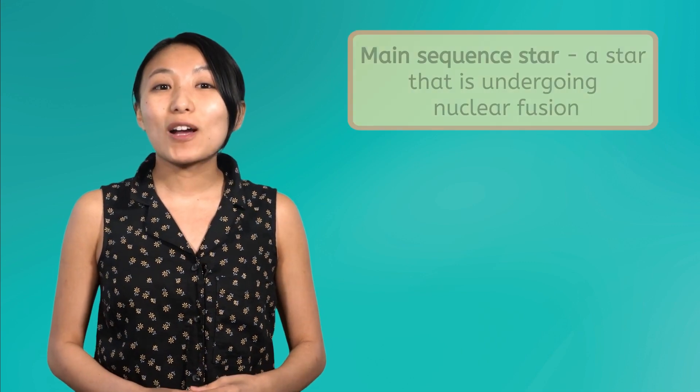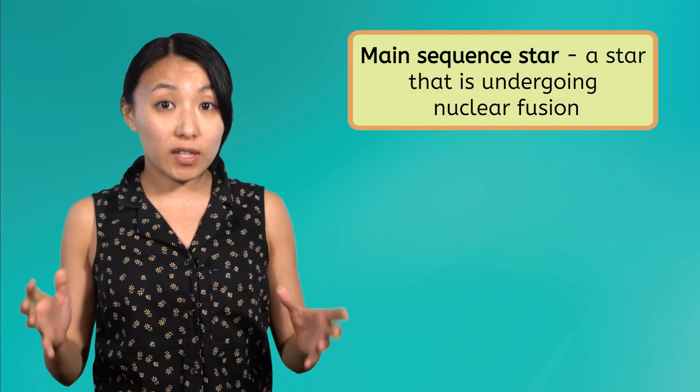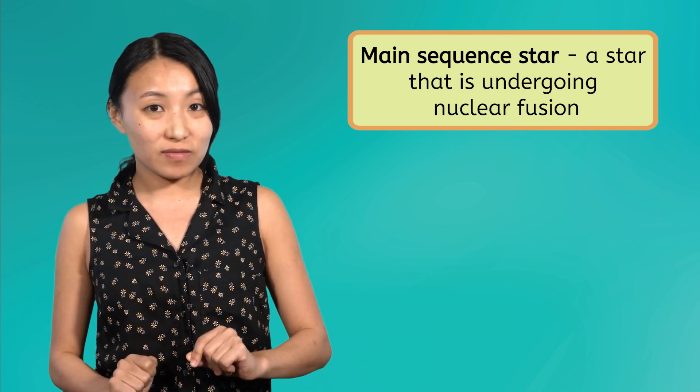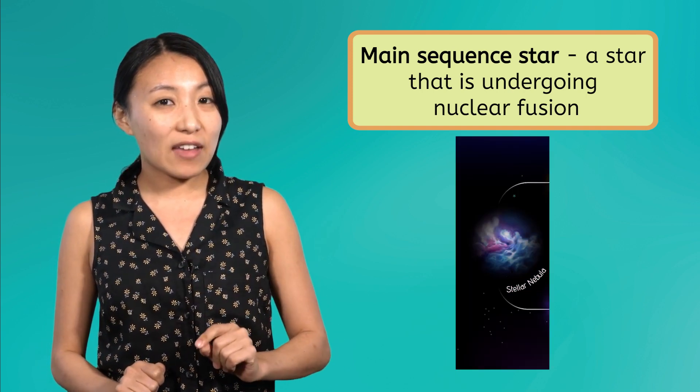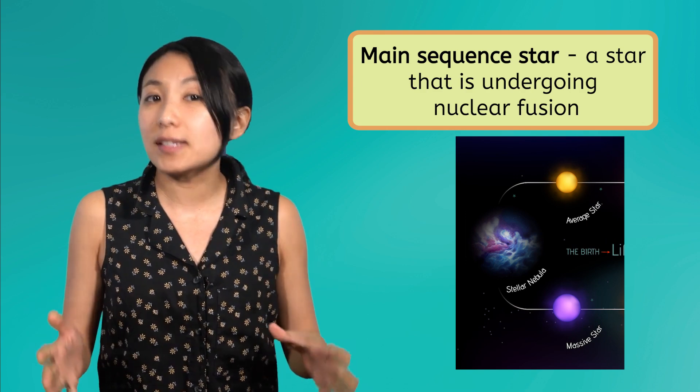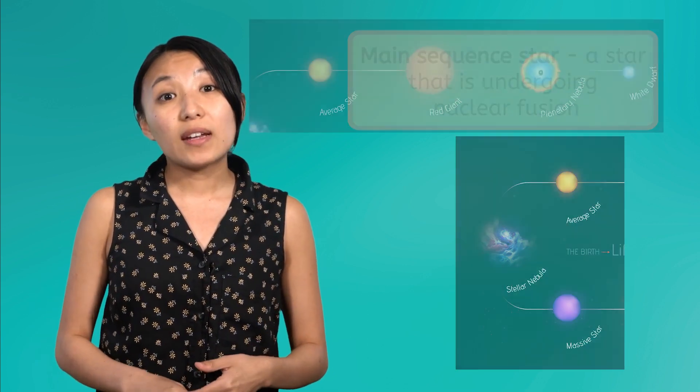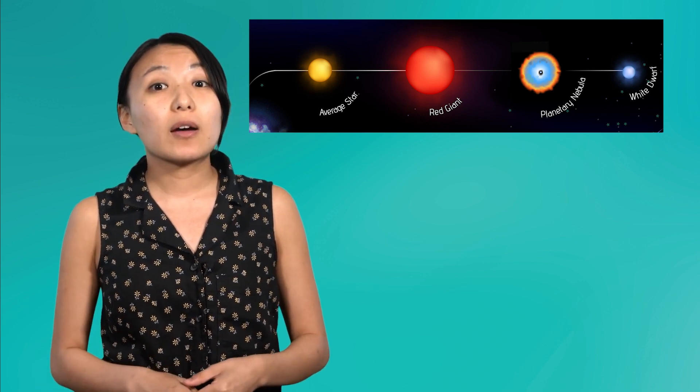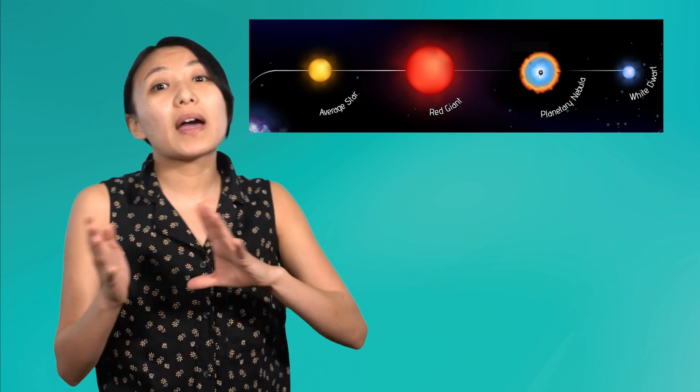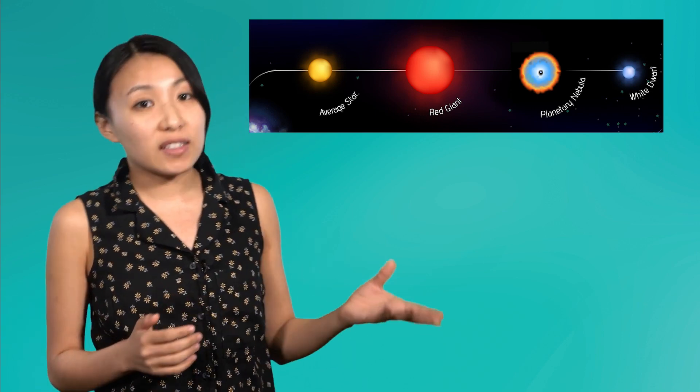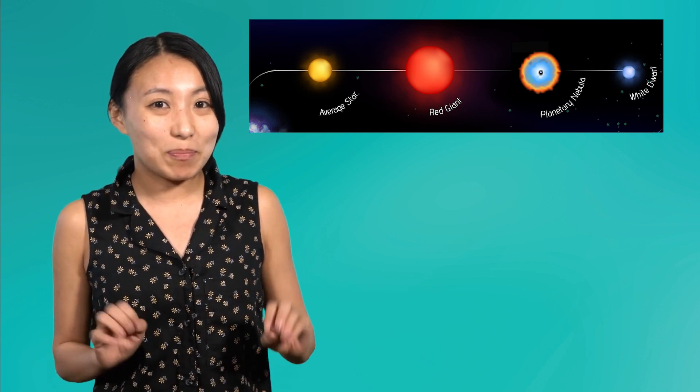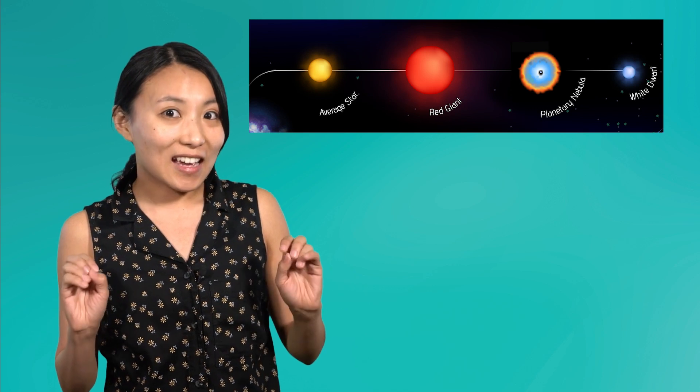Once the process of nuclear fusion begins within a star, it is considered a main-sequence star. This is where the star's path diverges, depending on its size. When an average-sized star has used up all of its fuel, it becomes a red giant, followed by a planetary nebula, and finally, a white dwarf. A massive star's path is a bit more explosive.